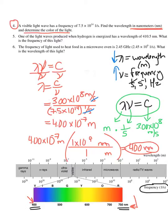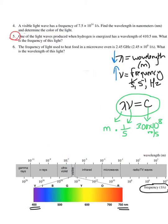Let's look at question number five. One of the lights produced when hydrogen is energized has a wavelength of 410.5 nanometers. What is the frequency of this light? I have wavelength and I know the speed of light, so I can solve for frequency. The only thing is, if using that equation, I need to make sure my wavelength is in meters — because if I'm using c with units of meters per second, lambda must be in meters. So I have a conversion to do before I start.